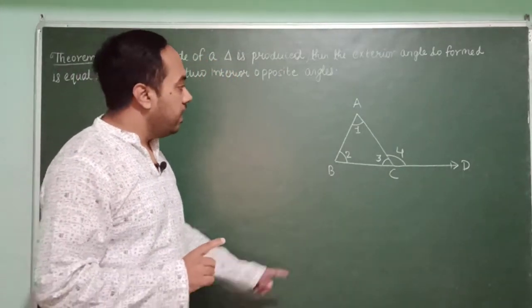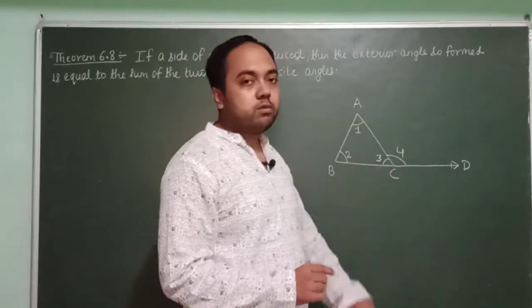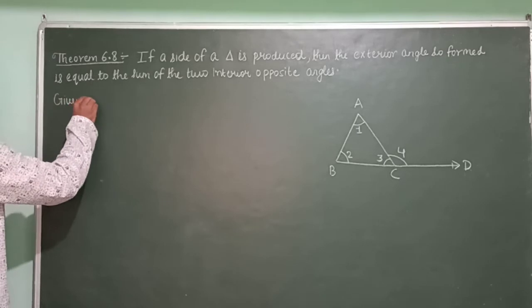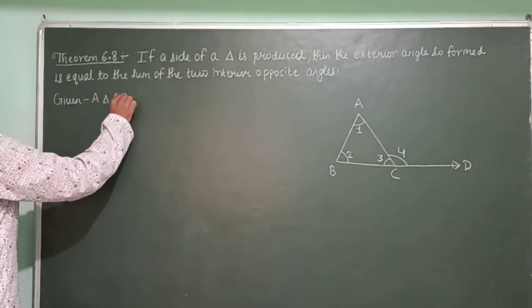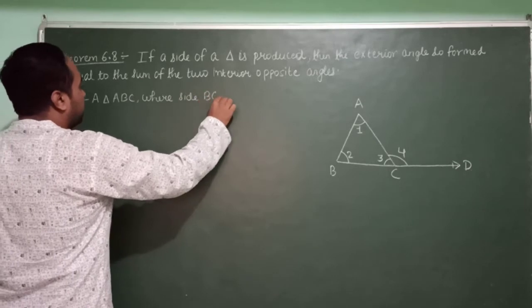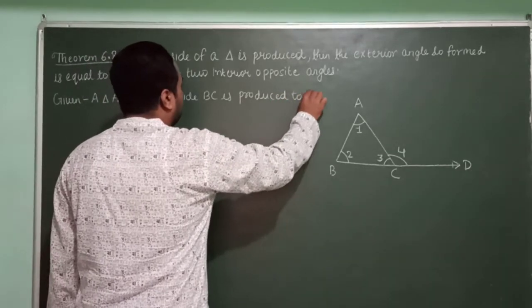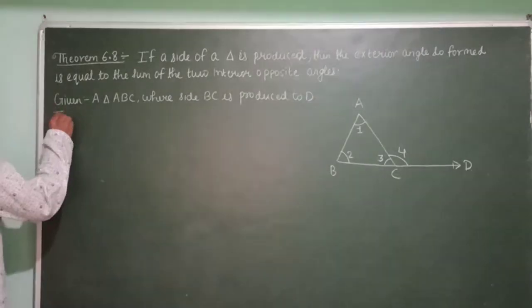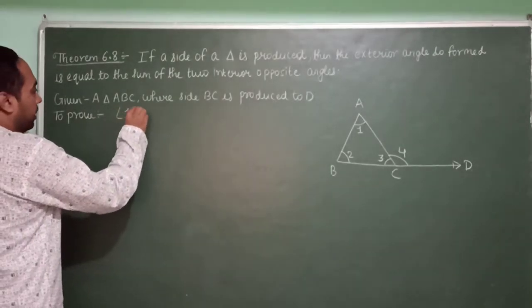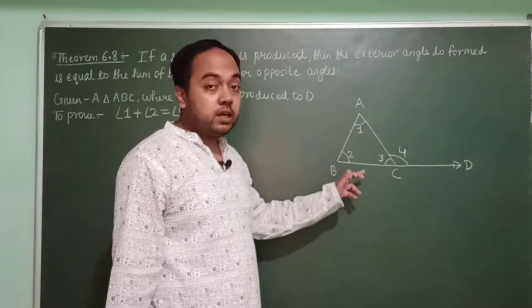Suppose this angle is 1, this angle is 2, this angle is 3, and this angle is 4. In this theorem, what we will prove is angle 1 plus angle 2 is equal to angle 4. Given: triangle ABC where side BC is produced to D. To prove: angle 1 plus angle 2 equals angle 4 — the exterior angle equals the sum of the two interior opposite angles.